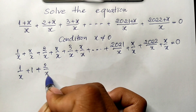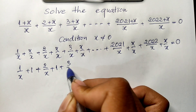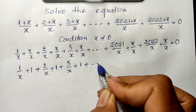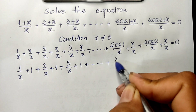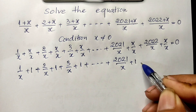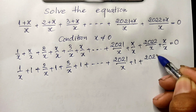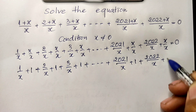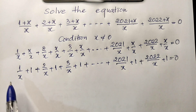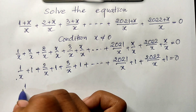Since h divided by h equals 1, this becomes: 1 divided by h plus 1, plus 2 divided by h plus 1, plus 3 divided by h plus 1, plus ... plus 2^21 divided by h plus 1, plus 2^22 divided by h plus 1, equal 0.